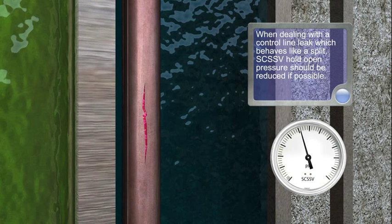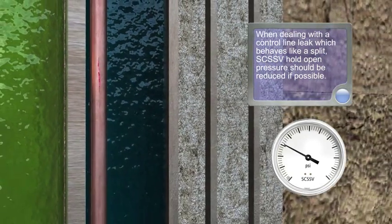When dealing with a control line leak which behaves like a split, SCSSV hold-open pressure should be reduced if possible.